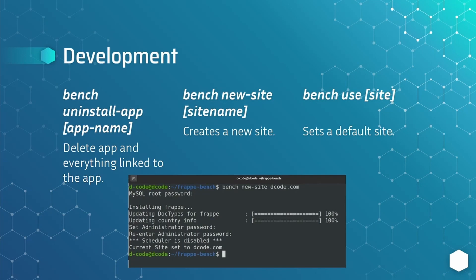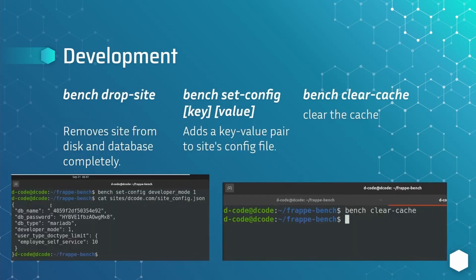To create a new site, run: bench new-site, then give the site name — it will create a new site inside the sites directory. We can specify the default site using: bench use, then the site name. To remove a site, run: bench drop-site. We can configure the site config file using: bench set-config, then add a key and value — for example, to enable developer mode: bench set-config developer_mode 1. To clear the caches, run: bench clear-cache, and it will clear all caches in that project.